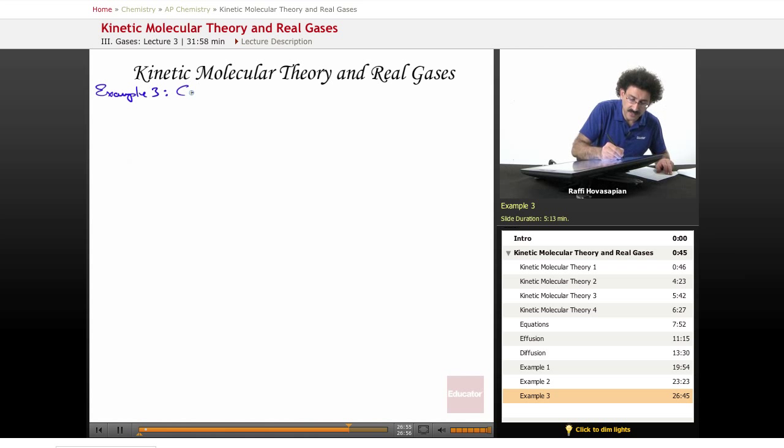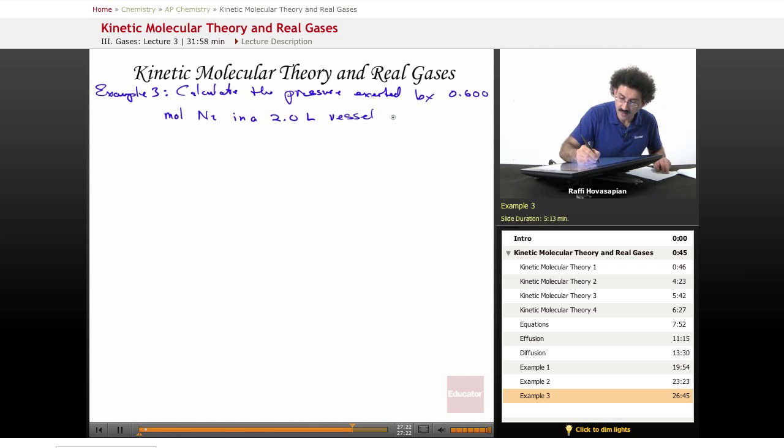It says calculate the pressure exerted by 0.600 moles of nitrogen gas in a 2.0 liter vessel at 35 degrees Celsius using A, the ideal gas law,